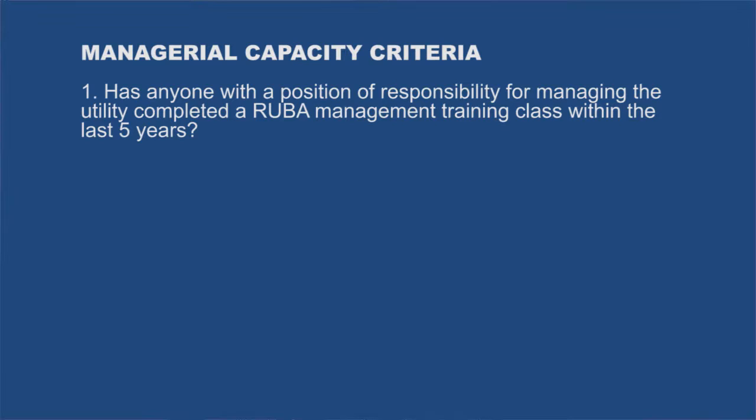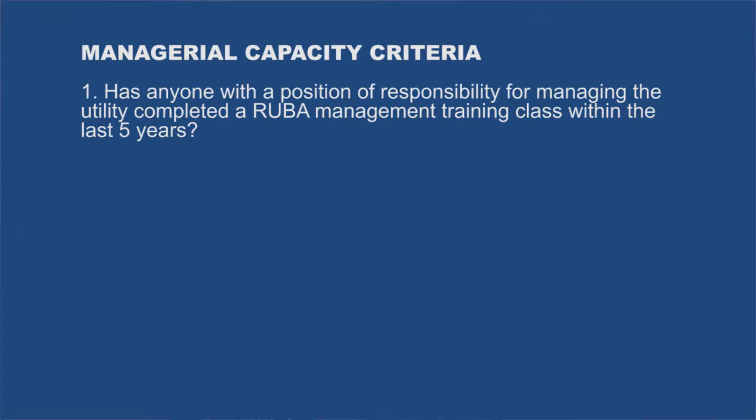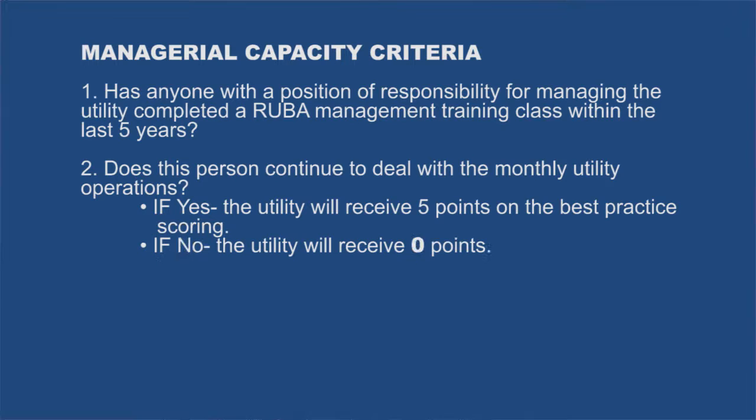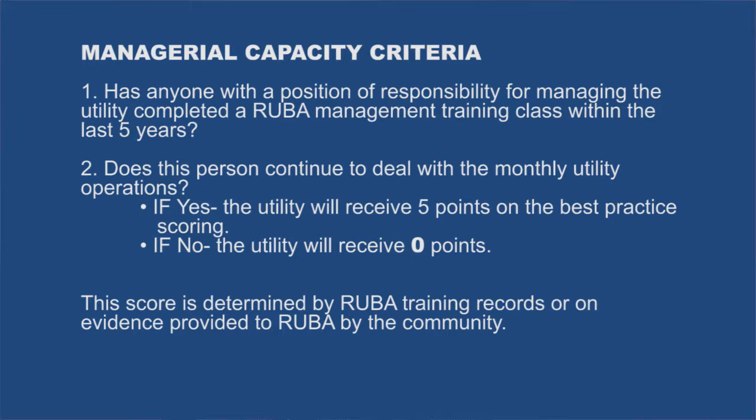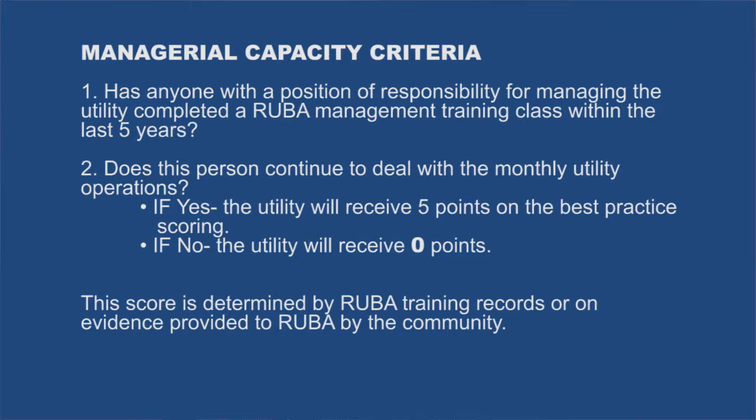Has anyone with a position of responsibility for managing the utility completed a RUBA utility management training class within the last five years? Does this person continue to deal with the monthly utility operations? If yes, the utility will receive five points on the best practices scoring. If no, the utility will receive zero points. This score is determined by RUBA training records or on evidence provided to RUBA by the community.